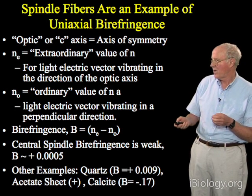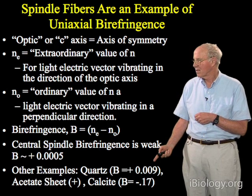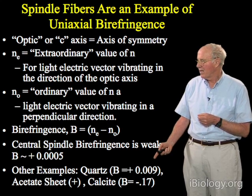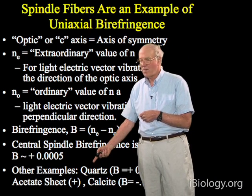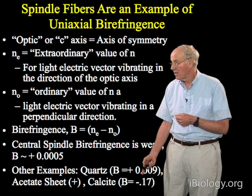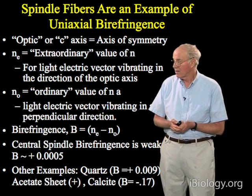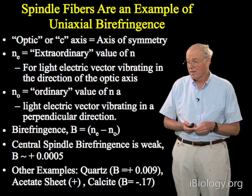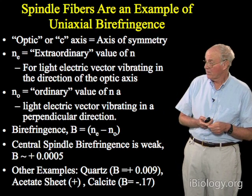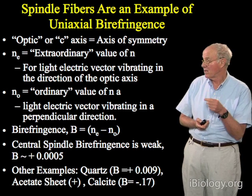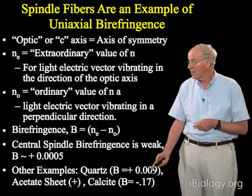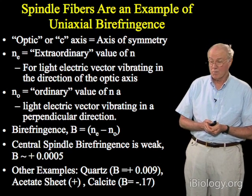For comparison, quartz — which is positively birefringent due to anisotropy in its atomic architecture — has a birefringence of 0.009. Acetate sheets, which are long hydrocarbon polymers, are positively birefringent. A negatively birefringent specimen is calcite crystals, probably the most birefringent material at 0.17. Calcite crystals exhibit very noticeable double refraction for incident light not perpendicular to its vibration axes, as discussed in Shinya Inouye's talk in this series.